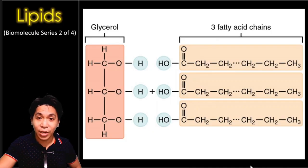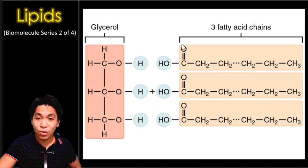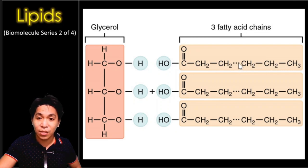The formation of a triglyceride happens like this. You need to have a glycerol — a three-carbon molecule with three hydroxyl groups. One, two, three hydroxyl groups. And then you also need to have three fatty acid chains. Each fatty acid has a carboxylic acid and a long chain of carbon atoms.